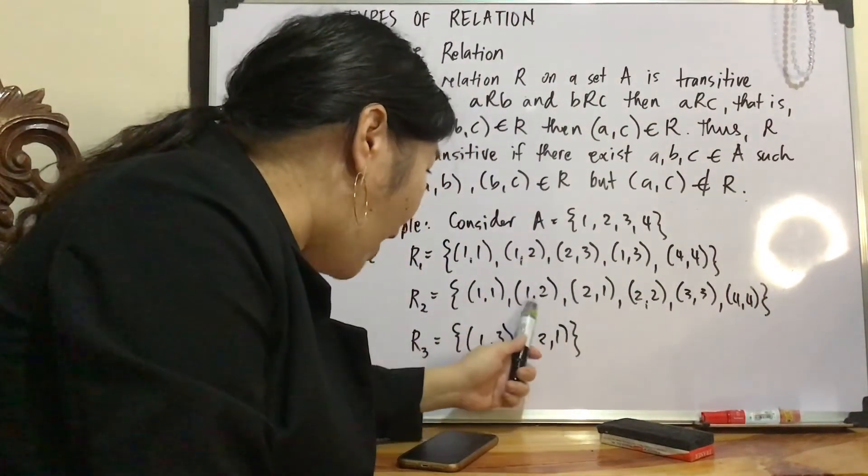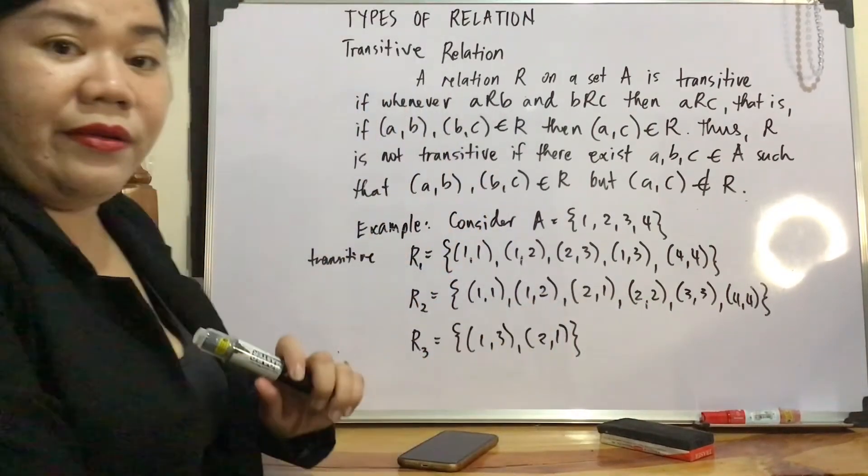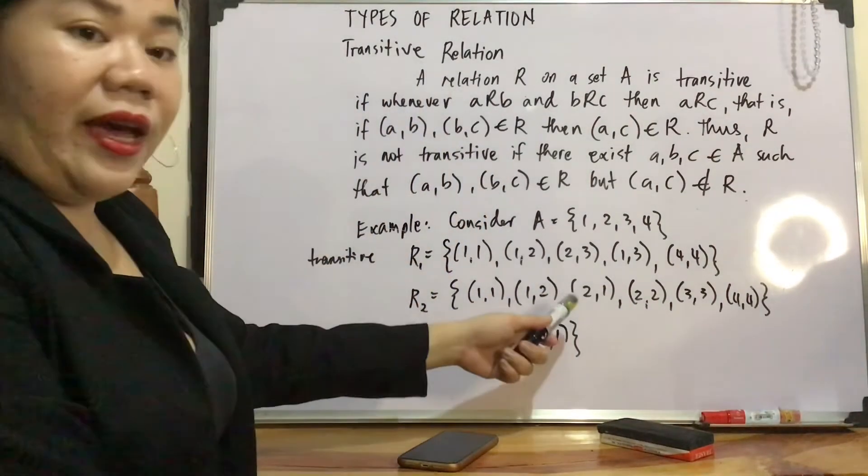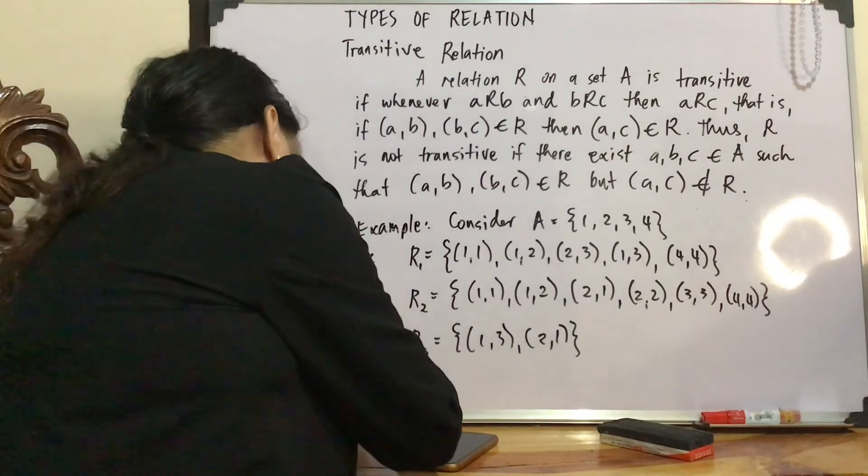(2,1), (1,2). That's (2,2). (2,2) is here. Okay? So R2 is transitive.